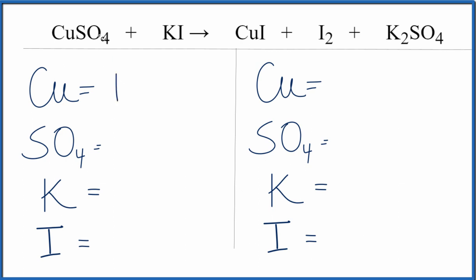We have one copper, and then because I have SO4 here, and I have SO4 on the product side, I can just call this SO4 one thing, and chemically it's staying together in this kind of quasi-double displacement reaction. So we have one sulfate, we have one potassium, one iodine.